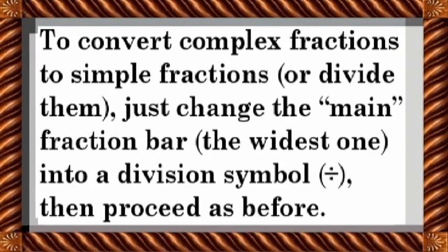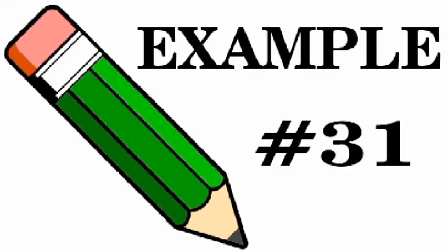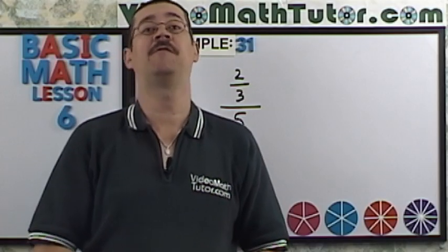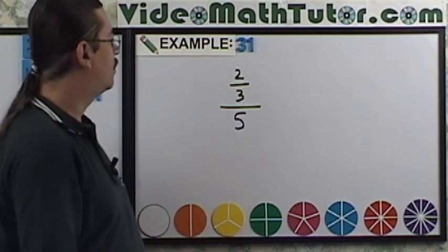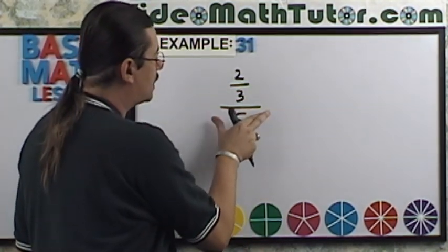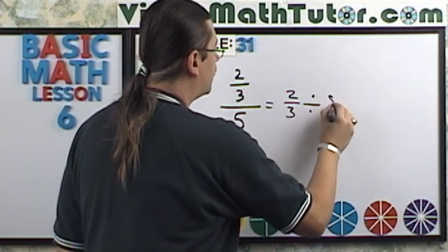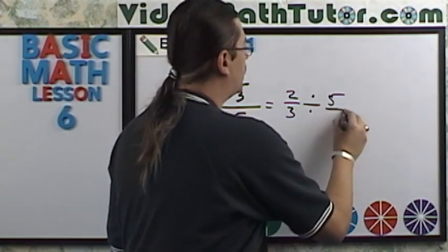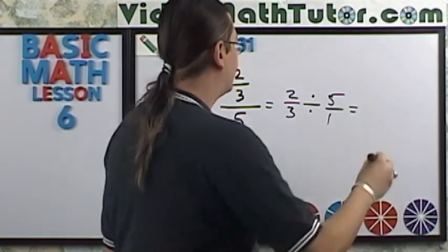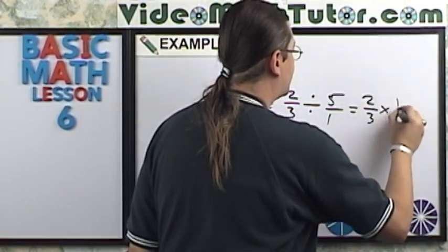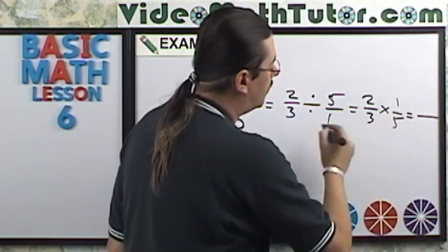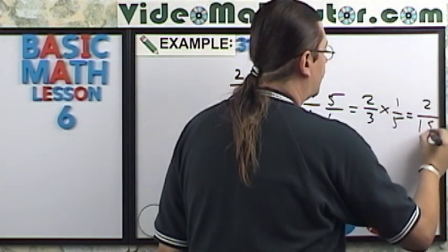To convert complex fractions to simple fractions, or divide them, just change the main fraction bar, the widest one, into a division symbol. Then proceed as before. Let's simplify this complex fraction. So notice this is the widest fraction bar, so that's going to become our division symbol. This is equal to two-thirds divided by five. And then to divide this, the first step is put that over one. Then we invert and multiply. So we're going to get two-thirds times one-fifth, and nothing can be cancelled. So we're just going to get two-fifteenths.